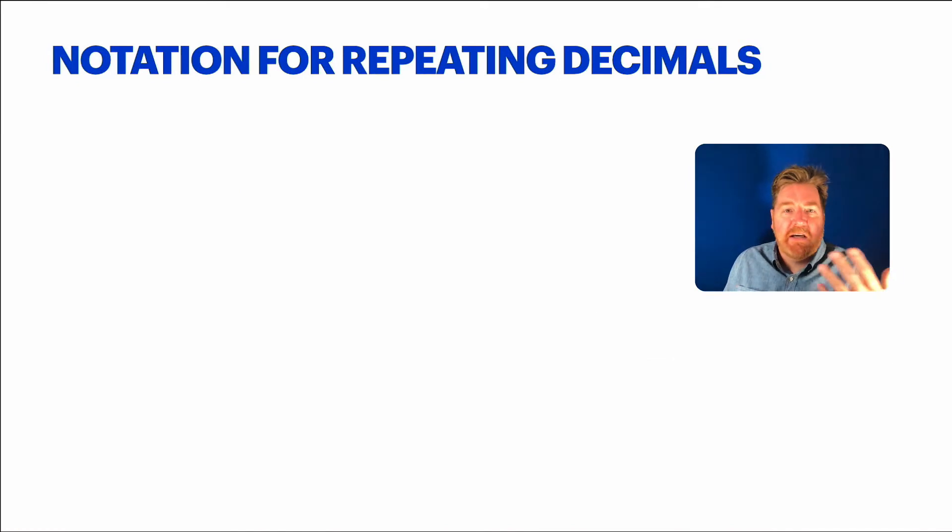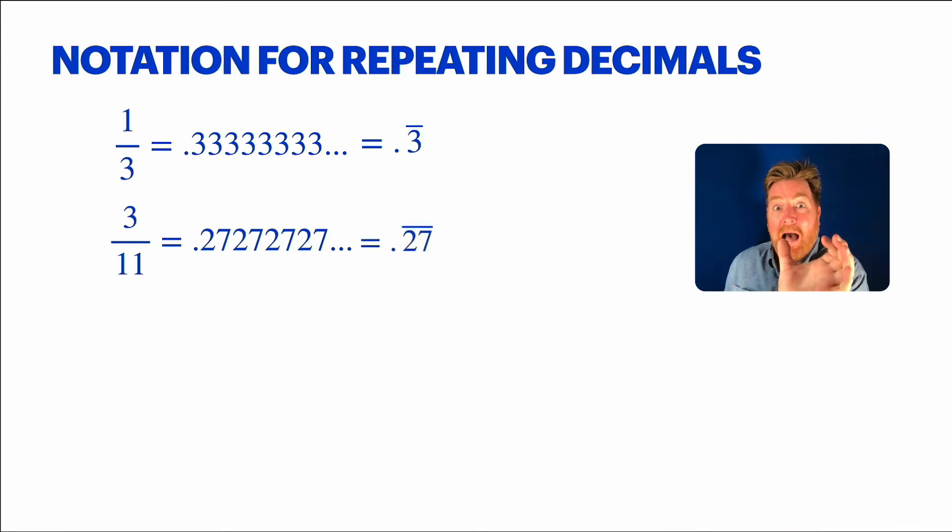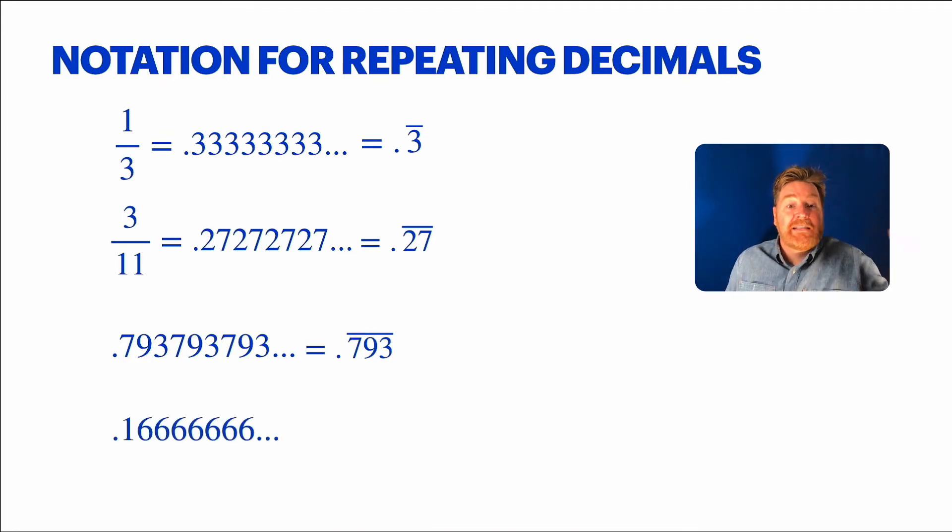Because they happen so often, people came up with a notation for them. Like the 1/3 as 0.33333. You can just write it as 0.3 with a little bar over that 3. That tells people that the 3 is just going to repeat over and over again. Kind of a cool notation. In our number of 3/11, it was 0.272727, blah blah blah. So, in that case, it's the 27 block that repeats over and over again. Still pretty cool notation. It saves us from writing a lot of stuff. If you had 3 digits that repeat, like 0.793, 793, et cetera, et cetera, you just put the bar over all three. Or something like 0.16666, it eventually repeats. So, we would just want to tell them that the 6 repeats. Not the 1, just the 6.